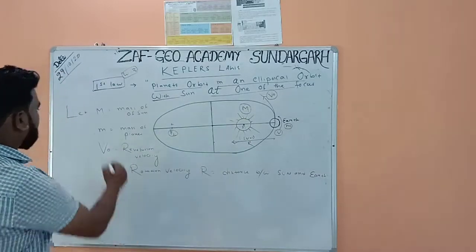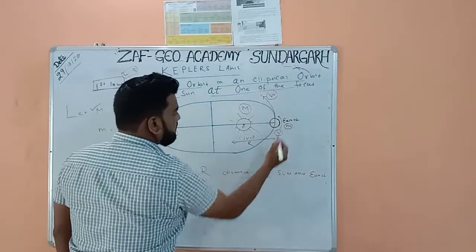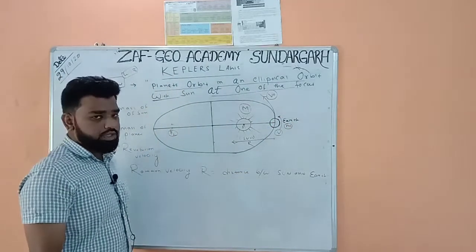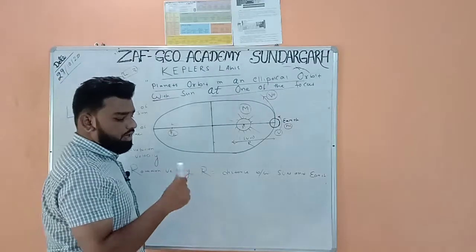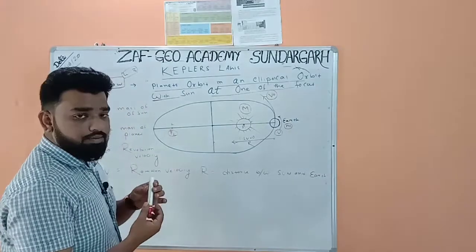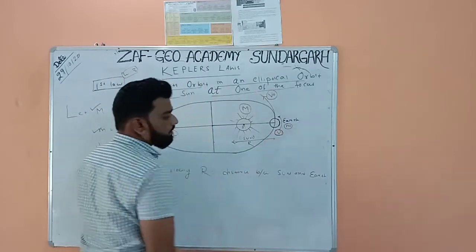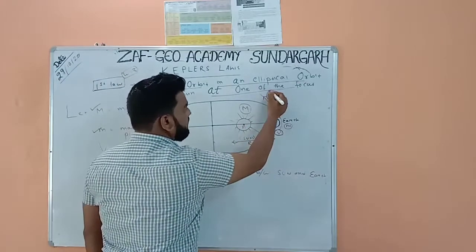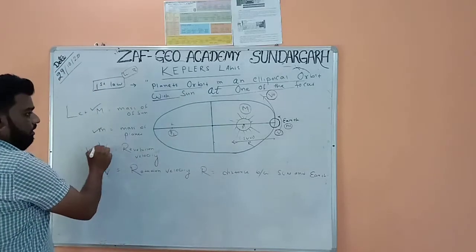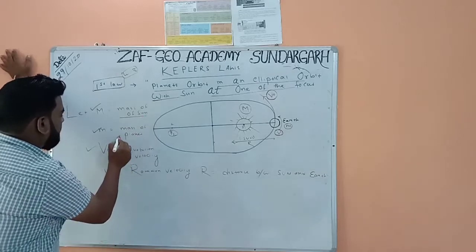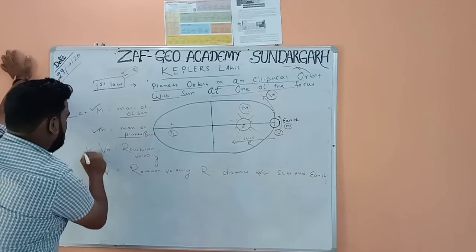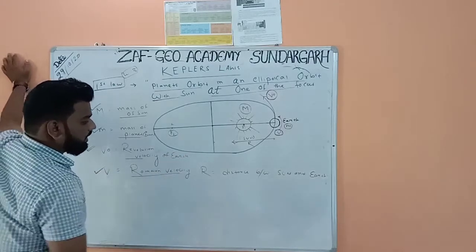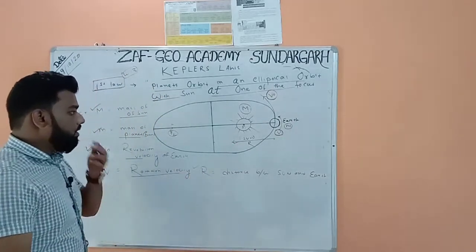Let the mass of the Sun be capital M and small m is the mass of the Earth. As I mentioned in the last lecture, every planet has two motions: rotation and revolution. When Earth rotates on its own axis it has a velocity V, and since it also revolves around the Sun it has a revolution velocity V0. R is the distance between the Sun and Earth.